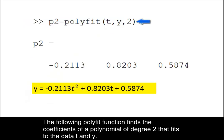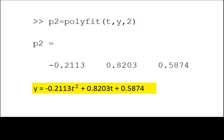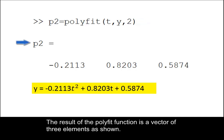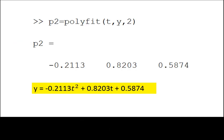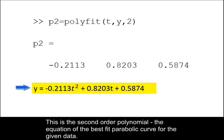The following polyfit function finds the coefficients of a polynomial of degree 2 that fits to the data t and y. The result of the polyfit function is a vector of three elements as shown. This is the second order polynomial — the equation of the best fit parabolic curve for the given data.